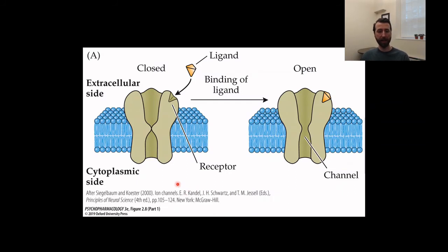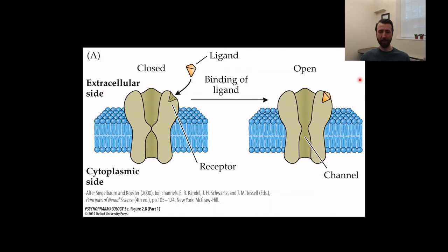Looking at this another way: we have the extracellular side and the cytoplasmic side, with our lipid bilayer and membrane protein. The ligand comes in, it's the right shape, so it binds to the receptor. That binding causes a conformational change in the protein, opens up the channel, and now ions can flow through.